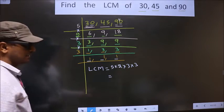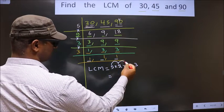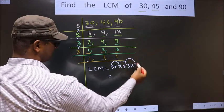So let us multiply. That is 5 into 2, 10. 10 into 3, 30. 30 into 3, 90.